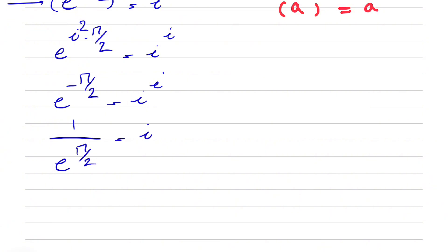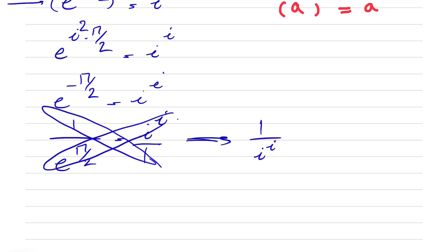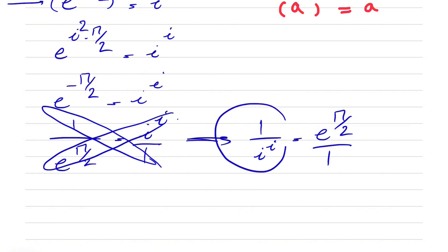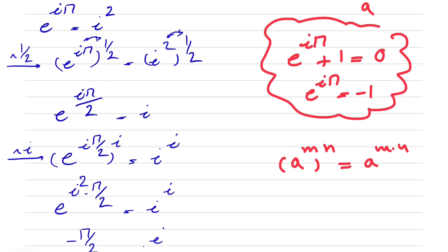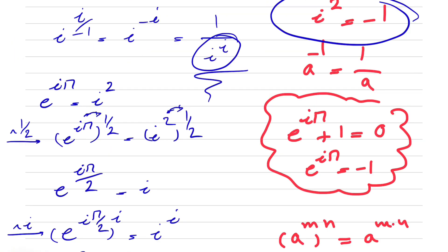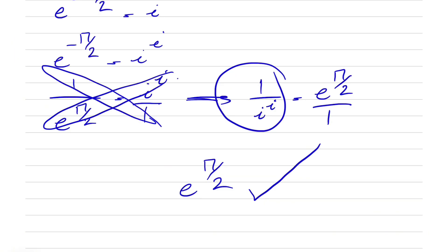We know the left side can be written as 1 over e to the power of pi over 2. So doing a cross multiplication, 1 over i to the power of i can be written as e to the power of pi over 2. And this is essentially what we ended up with in our expression — the final answer is e to the power of pi over 2.